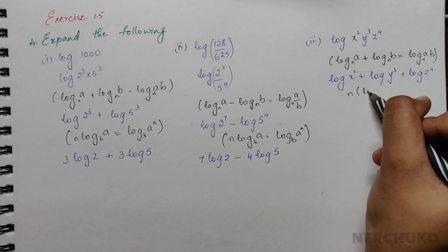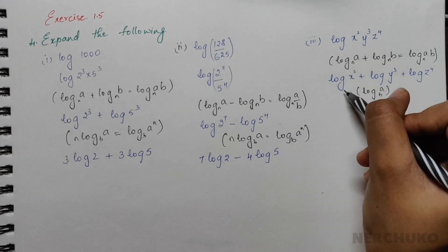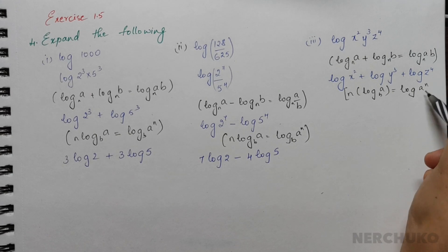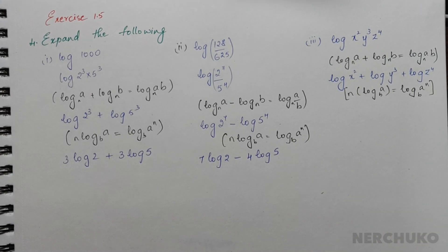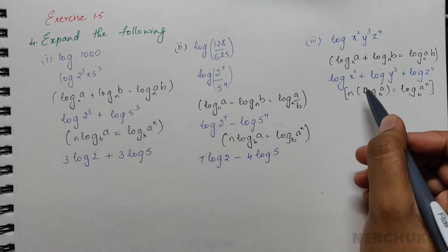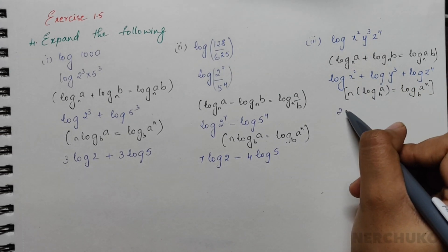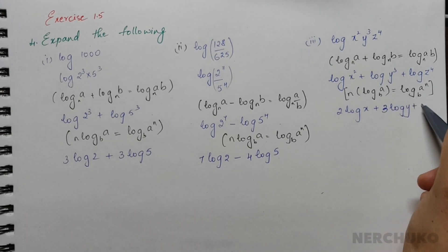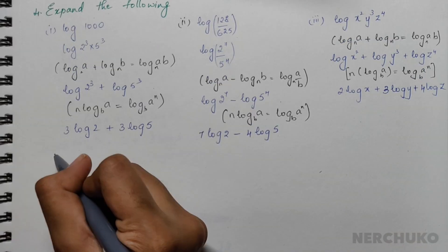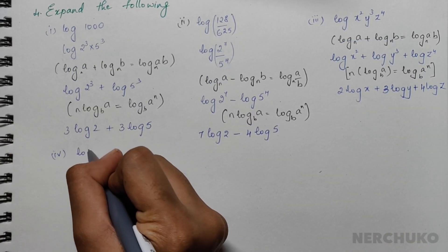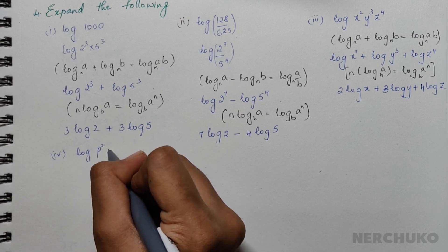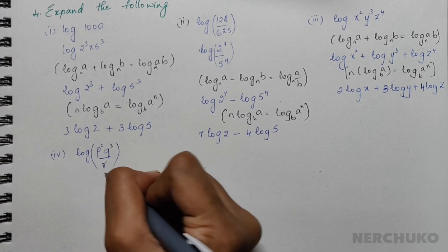Applying the formula n·log a = log(aⁿ) to each term, I would have 2·log x plus 3·log y plus 4·log z.